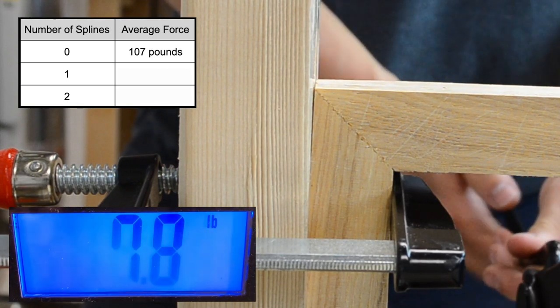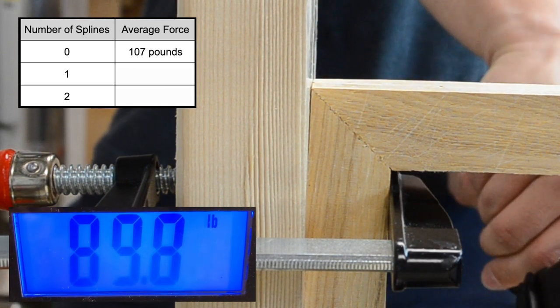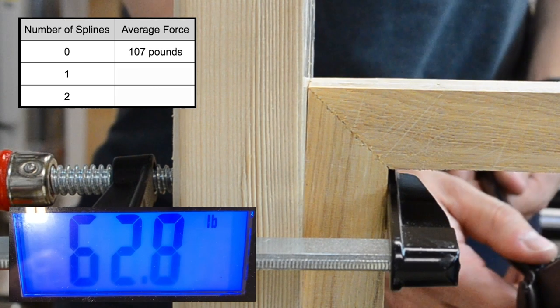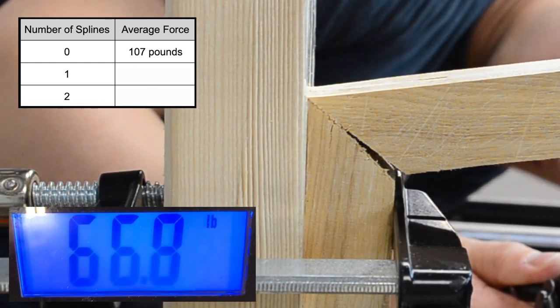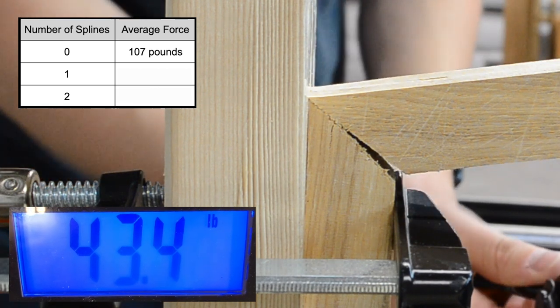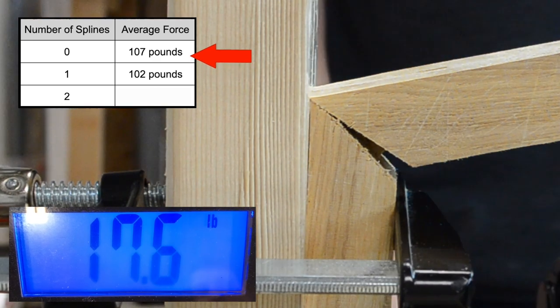Next I tested the joints with the single spline in them, and that's where things started to get weird. The first of these took only 97 pounds to break, and the second took 106, which averages out to 102 pounds. That's actually less force than the joints with no splines.